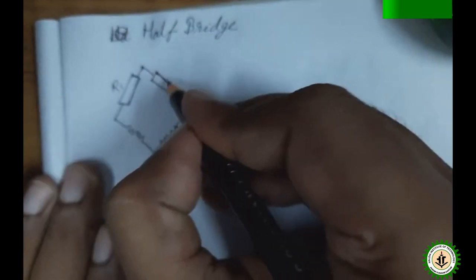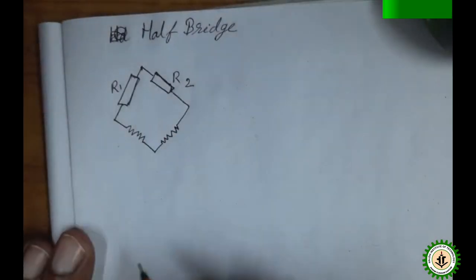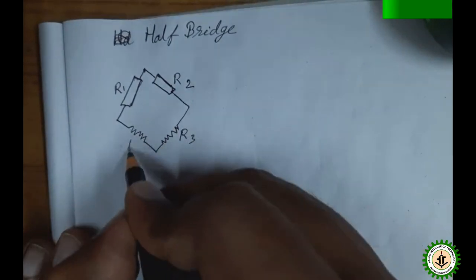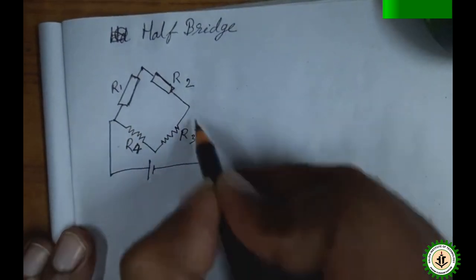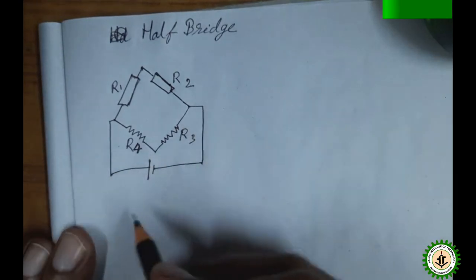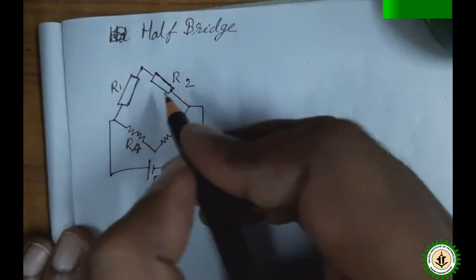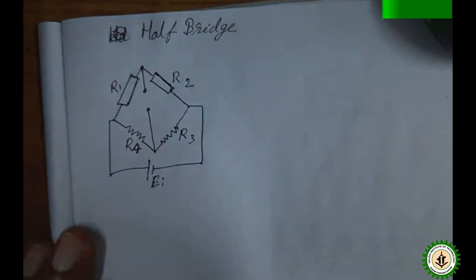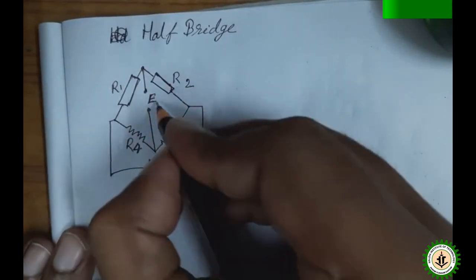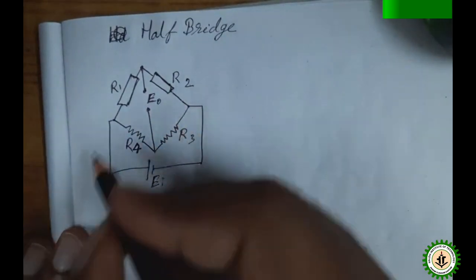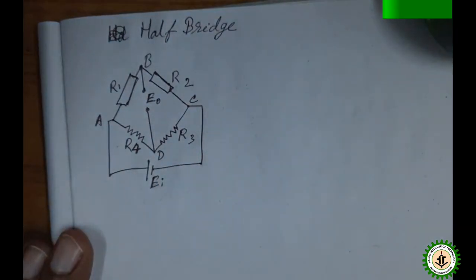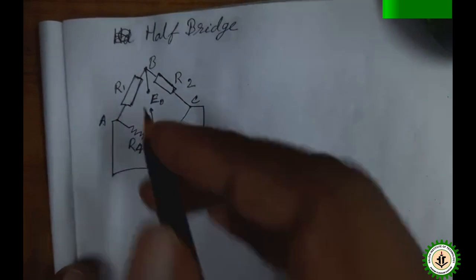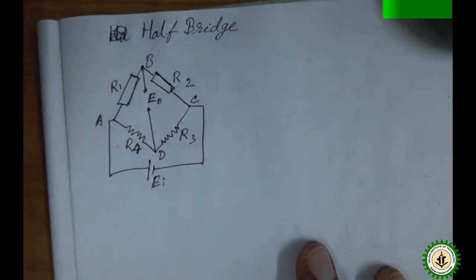So the half bridge circuit has R1 and R2 as strain gauges and R3, R4 as standard resistances. Power supply EI is connected, and across the two diagonal points A-C we get the output voltage measured by a voltmeter. The nodes are labeled A, B, C, D.